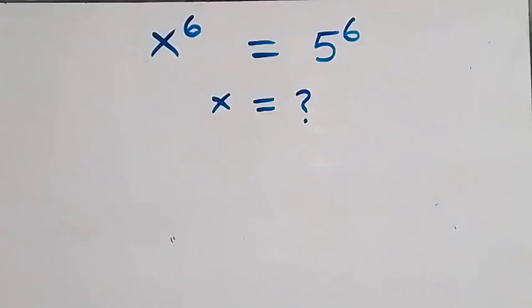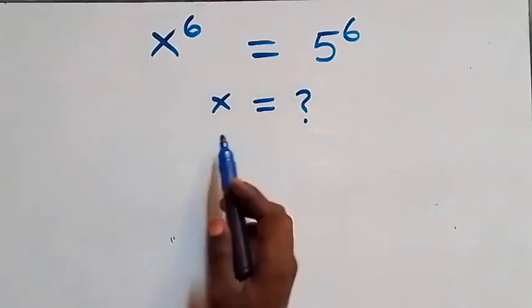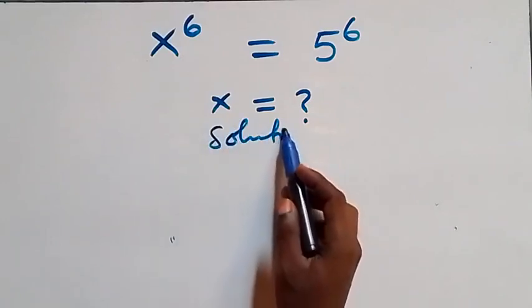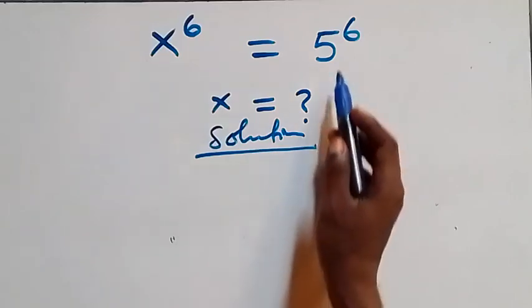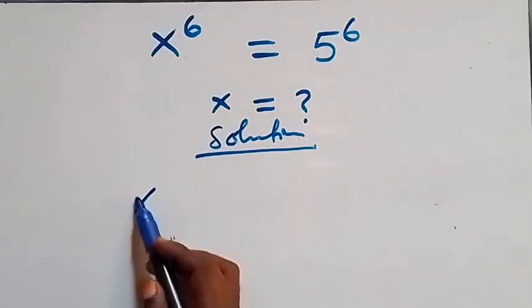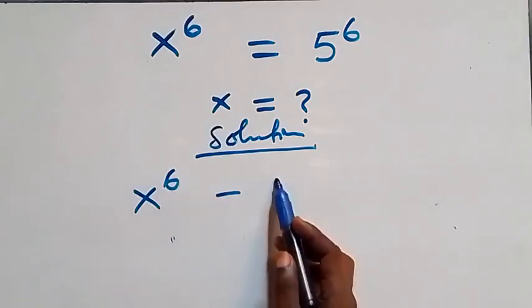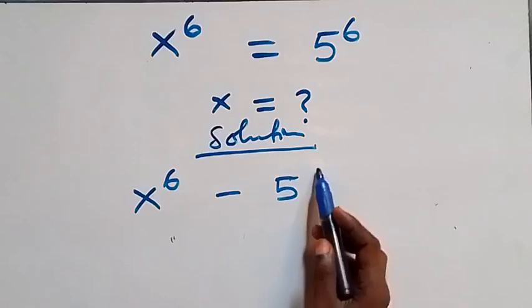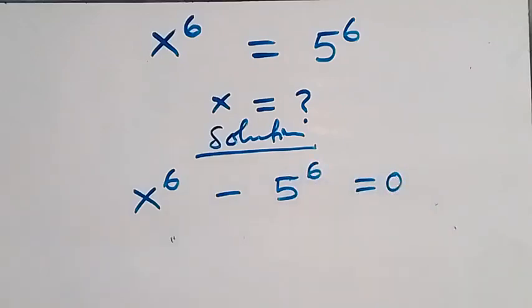Hello, you're welcome. Here we solve a nice exponential equation. We take 5 raised to power 6 to the left side, and this becomes x raised to power 6 minus 5 raised to power 6 equals to zero.